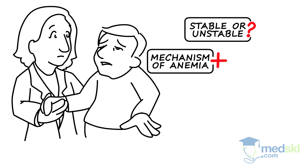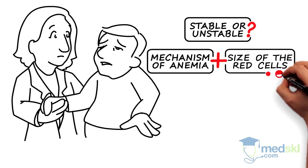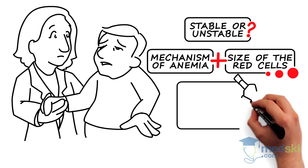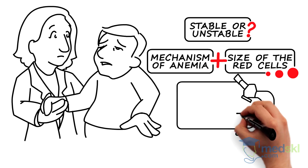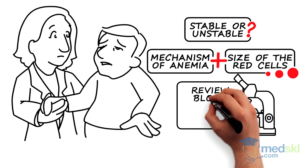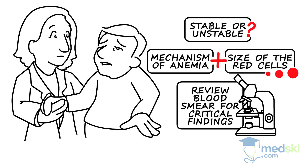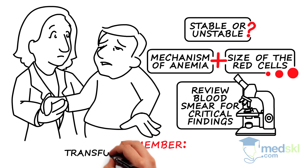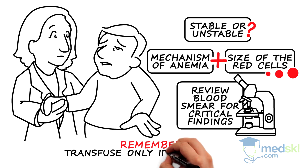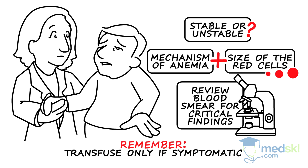And next, look at the size of the red cells and determine if the anemia is microcytic, normocytic, or macrocytic. Review the blood smear for critical findings such as red cell fragments or immature white cells, which are blasts. Remember, transfuse the patient with anemia only if they are symptomatic.